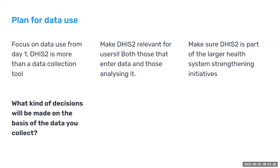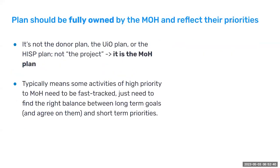DHIS2 is part of the larger health system strengthening initiatives. The DHIS2 plan should be fully owned by the Ministry of Health and reflect their priorities. It's not the donor plan — not Gavi's plan, not CDC's, not UNICEF's, not WHO's, not UIO's or HISP's plan. It's the Ministry of Health plan. A lot of people can come and say you should collect this or that data, but it really should be the Ministry of Health's plan. Sometimes to get everybody on board in the ministry you need to fast track certain activities, but make sure it's the Ministry's plan.